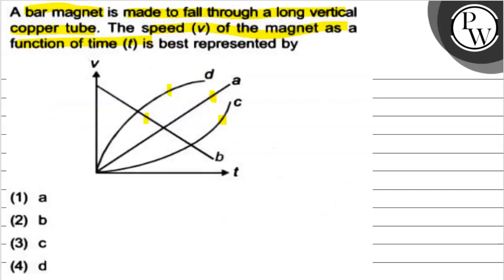It means that initially the magnet's velocity is highest and is decreasing linearly. So among these four curves, curve B represents the best situation.